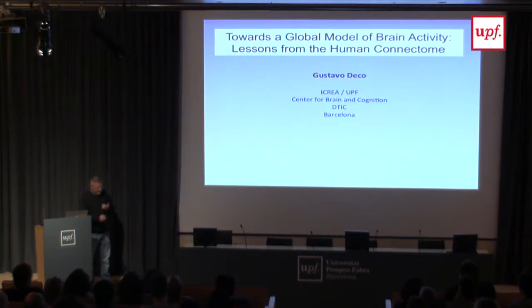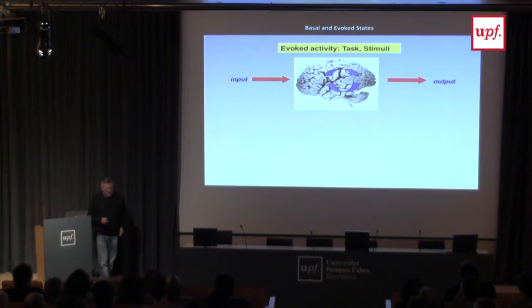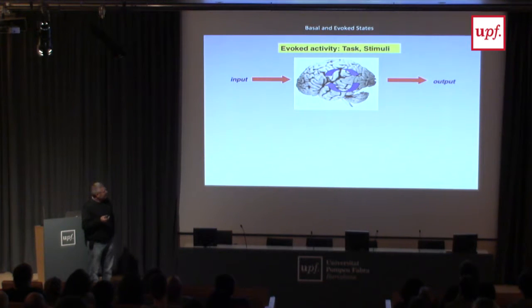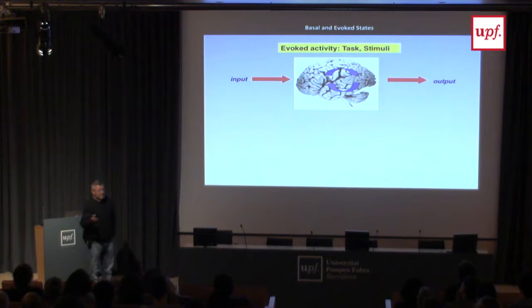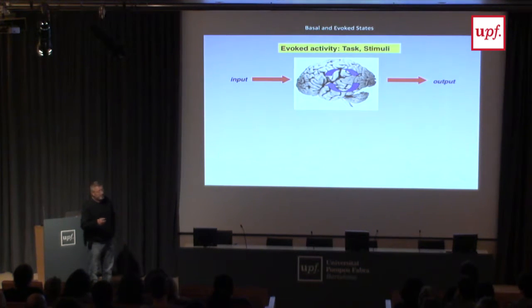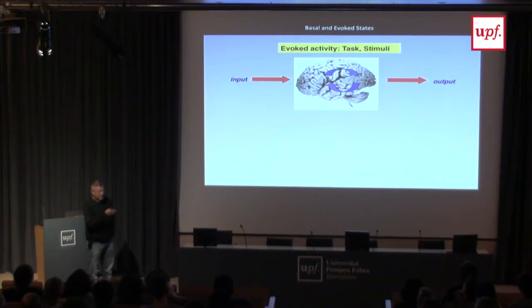Let me start with a very simple slide — a cartoon that includes some philosophy. The way we study the brain in neuroscience is standard, exactly the same philosophy applied in physics, chemistry, and engineering. It's called the solution of the inverse model in physics, or the reverse engineering problem. You have a black box — in our case the whole brain.